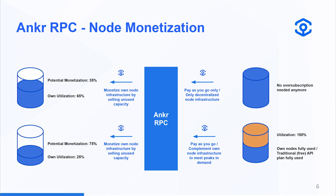The monetization model of Anchor RPC: on the left-hand side, node providers are also typically consuming their own nodes. They don't always consume the full capacity — they need to maintain overcapacity to meet peaks in demand. If requests exceed node capacity, the end user can suffer significant latency. But most of the time, those node providers are not using the full capacity of their nodes, and here they have the option to monetize that unused capacity by connecting to Anchor RPC.